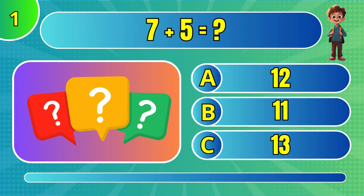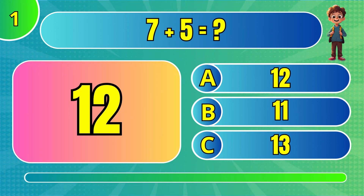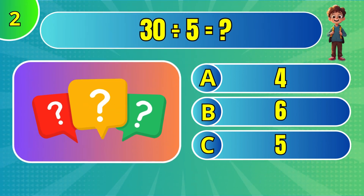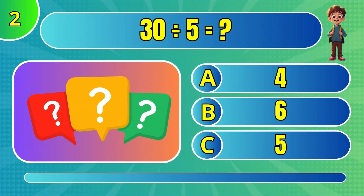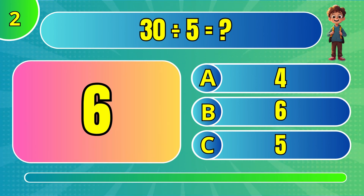What is 7 plus 5? A. 12. What is 30 divided by 5? B. 6.